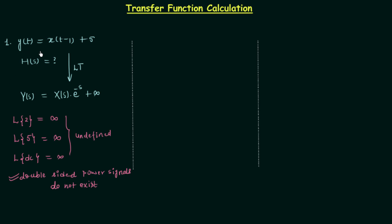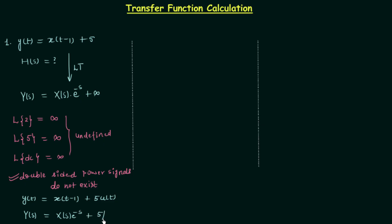Now I will modify the system relationship. Instead of y(t) = x(t−1) + 5, we will have y(t) = x(t−1) + 5·u(t). Now you can calculate the Laplace transform of this term. After taking the Laplace transform we have Y(s) equal to X(s)·e^(−s) plus 5 over s.